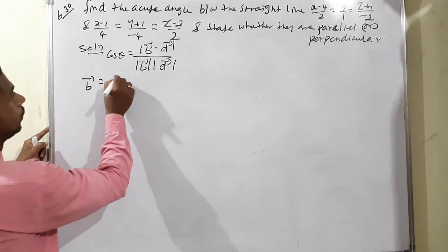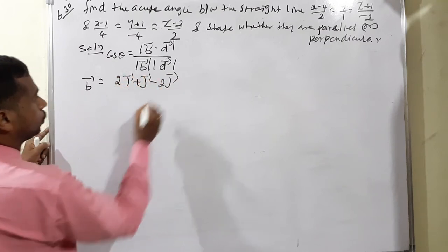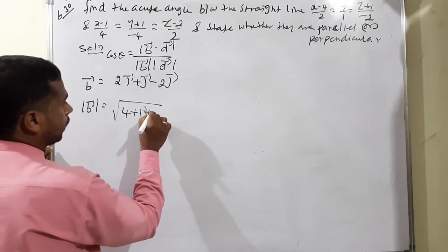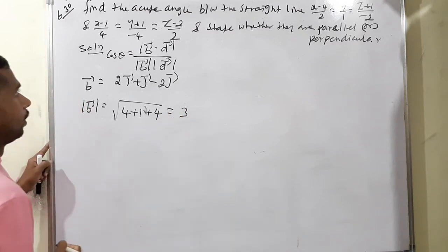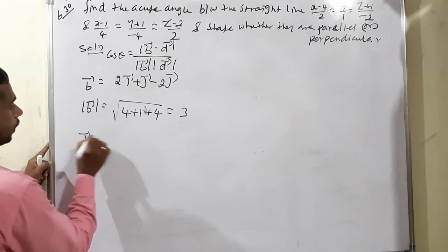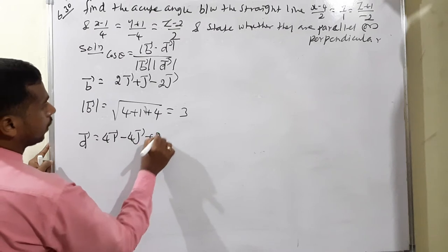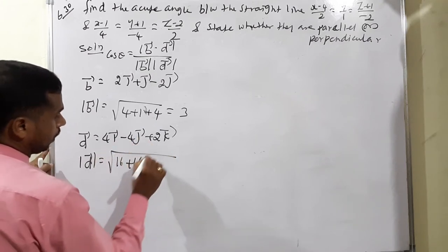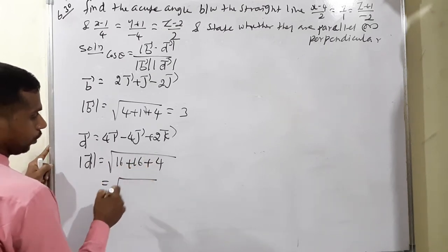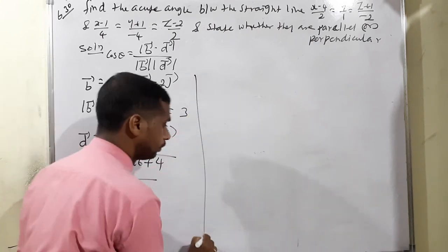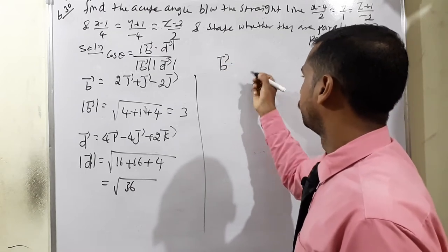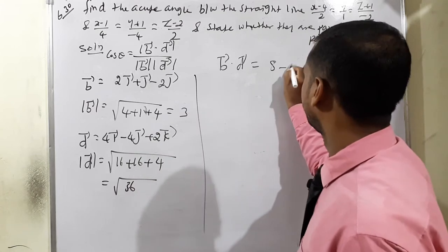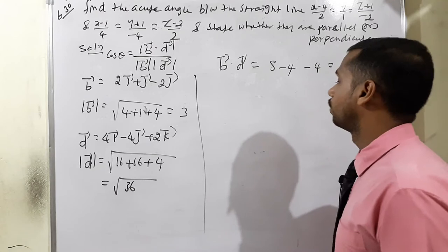First condition: b vector equals 2i plus j minus 2k. Modulus of b equals square root of 4 plus 1 plus 4 equals 3. Then d vector equals 4i minus 4j plus 2k. Modulus of d equals square root of 16 plus 16 plus 4 equals square root of 36. Now, b·d equals 2 times 4 plus 1 times negative 4 plus negative 2 times 2 equals 8 minus 4 minus 4 equals 0.